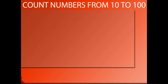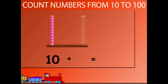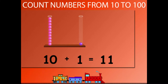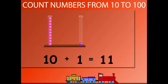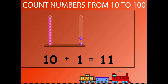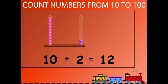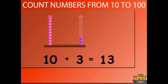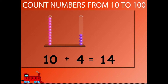Count numbers from 10 to 100. Let's begin with 10. 10 plus 1 is equal to 11. 10 plus 2 is equal to 12. 10 plus 3 is equal to 13.